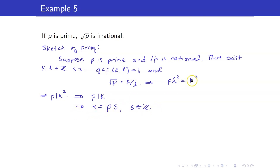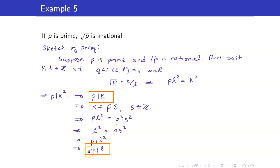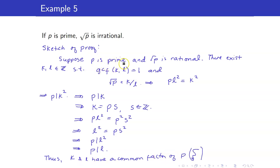Plugging K = ps into pL² = K² gives pL² = p²s², and dividing both sides by p (valid since p is prime and nonzero) gives L² = ps². This means p divides L², and by the theorem again, p divides L. So p divides both K and L — they have a common factor of p — which contradicts the assumption that GCF(K, L) = 1. Therefore, √p is irrational.